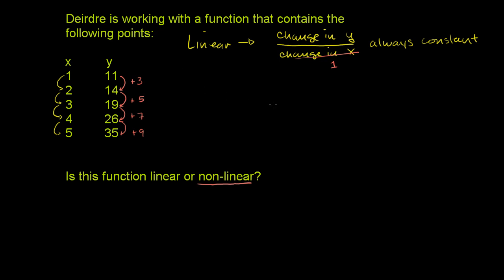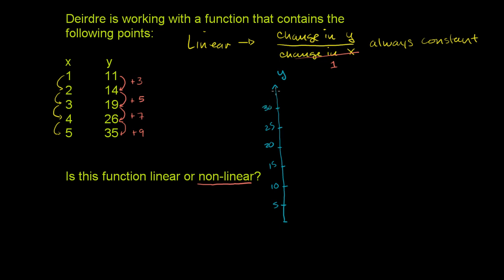And we can see that if we graph it out. So let me draw a rough graph here. Let me make that my vertical axis, my y-axis. We go all the way up to 35, so I'll do 5, 10, 15, 20, 25, 30, and then 35. And then our x values go 1 through 5, on this axis. So I'll do 1, 2, 3, 4, and 5.